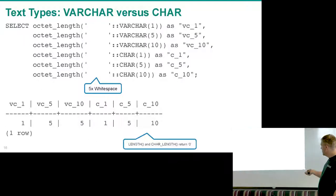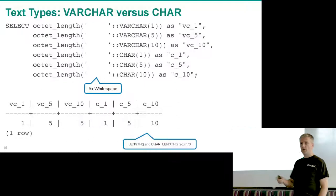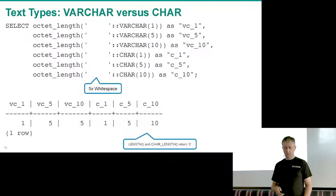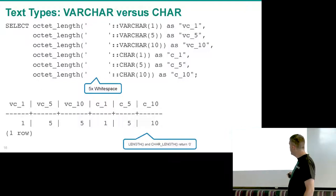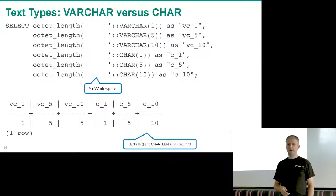Using length() will return zero because it cuts off trailing whitespace — whitespace and tabs. The key takeaway is: varchar removes all trailing whitespace, while char fills up to the length you specify.